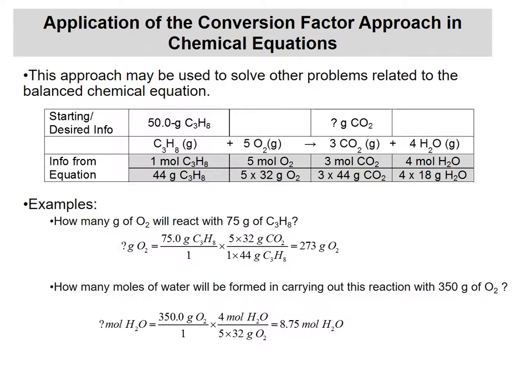The next example is: how many moles of water can be made from 350 grams of oxygen? You use the same approach — just swap out what the conversion factor looks like based on what you're starting with and what you're looking for.